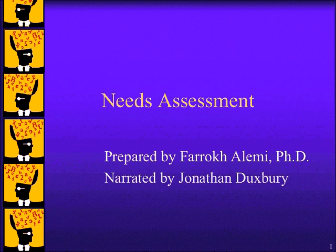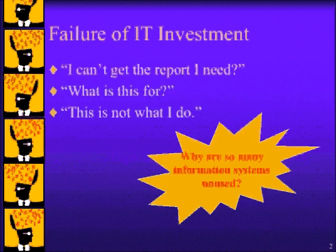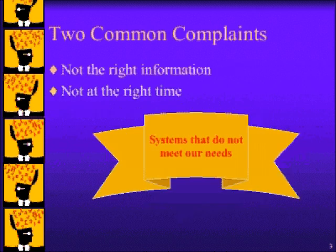A key reason why information systems fail is that they do not do what people expect. Many say that the system does not meet their needs. A key complaint is that the right information is not available at the right time. Either there is too much information, or the relevant information is not present, or even worse, everything is available but not when one needs it.